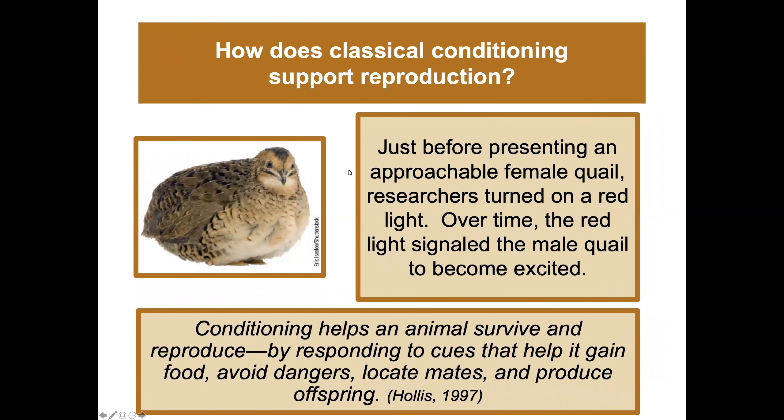Classical conditioning also supports reproduction. Researchers turned on a red light just before presenting an approachable female quail, and over time the red light signaled the male quail to become excited. Conditioning helps an animal survive and reproduce by responding to cues that help it gain food, avoid dangers, locate mates, and produce offspring.